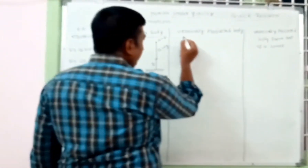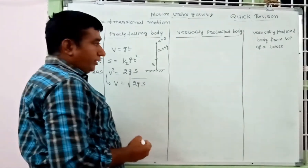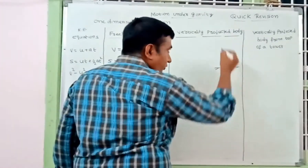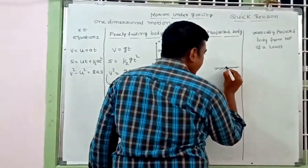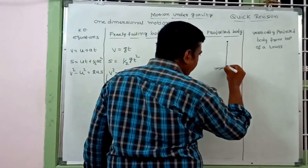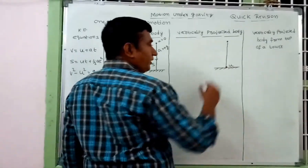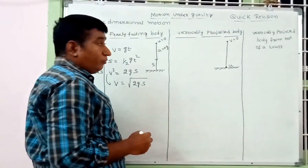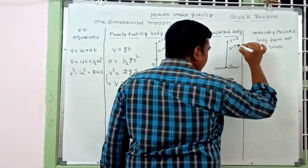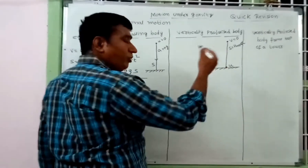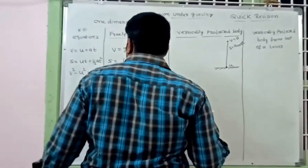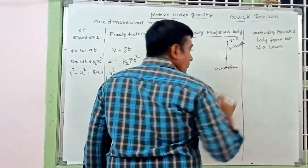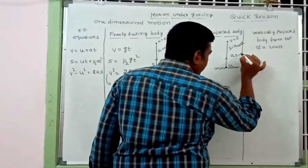For a vertically projected body moving from the point of projection to maximum height: the object has some initial velocity u, and at maximum height the final velocity v = 0. The displacement equals h_max. Since the object moves upward, acceleration is opposite to gravity: a = -g.